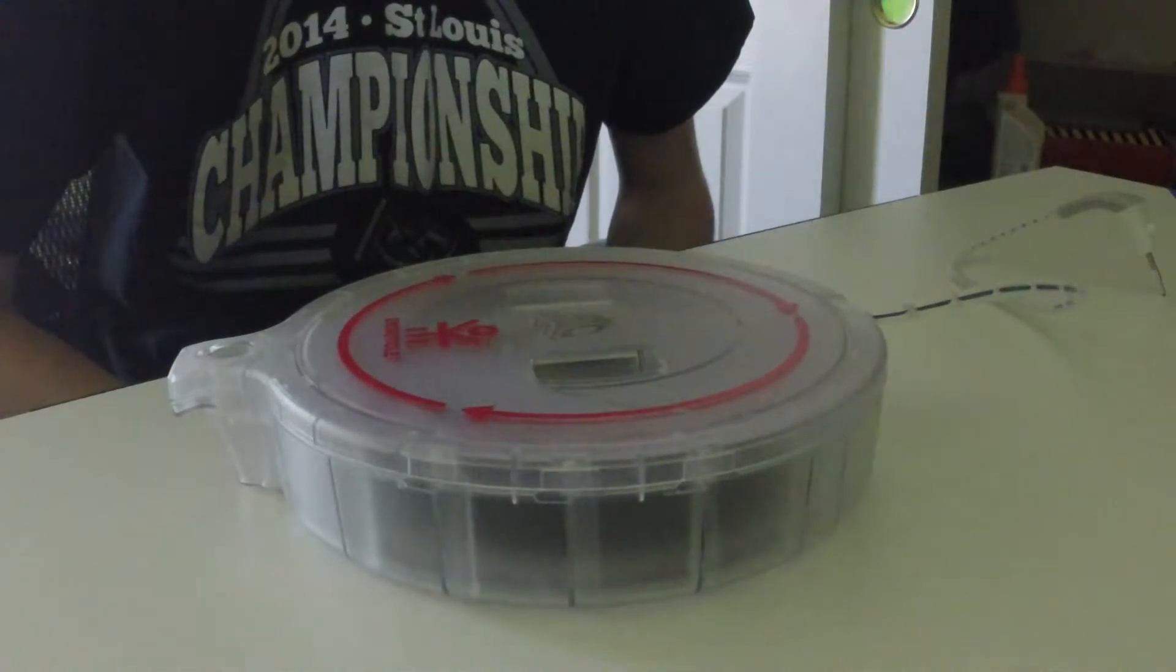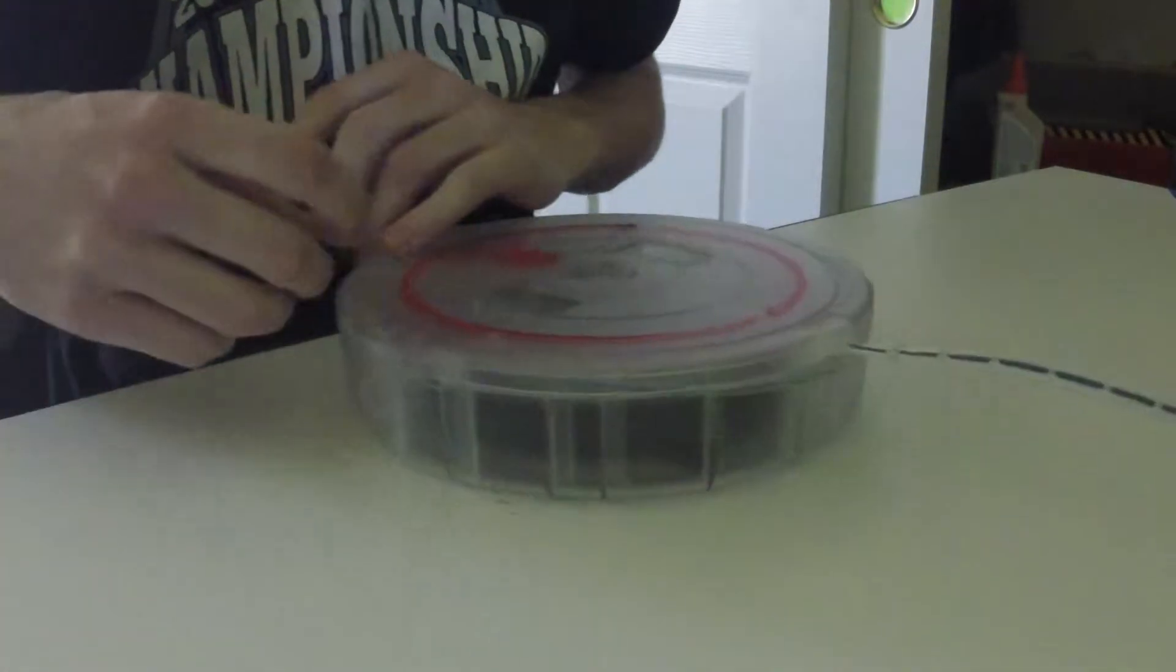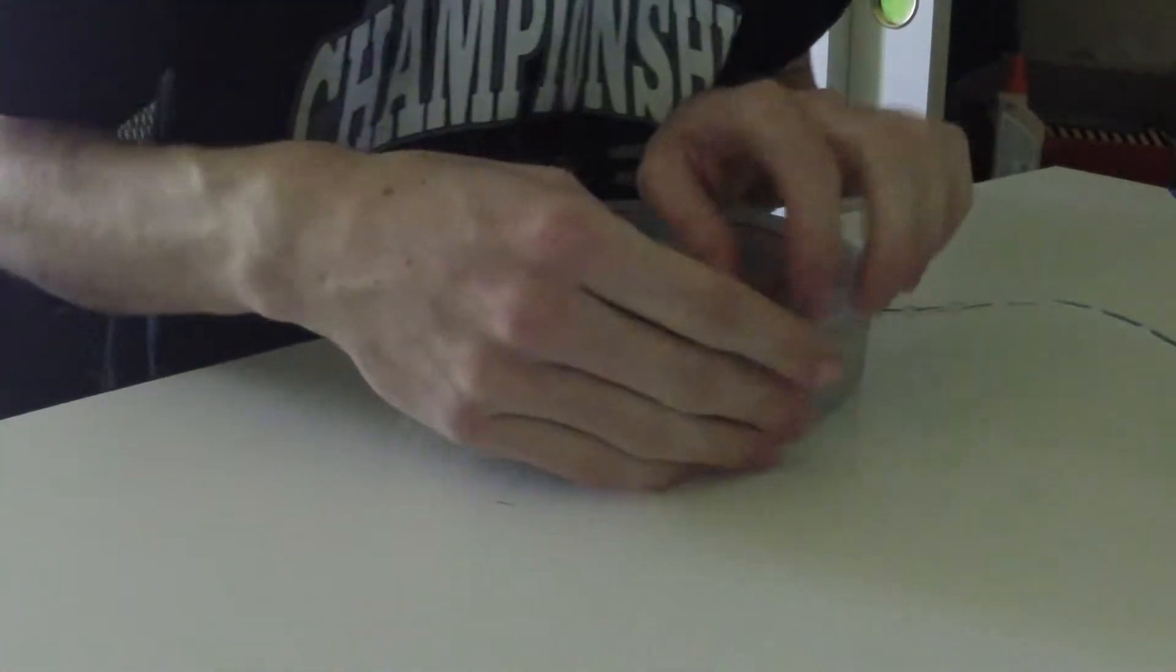The first step to unjamming your Echocycle 3D printer filament cartridge is to remove the jammed cartridge from the printer. This can be done from the settings menu on the machine.